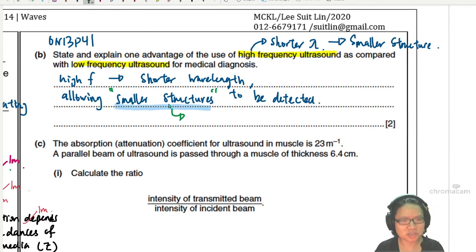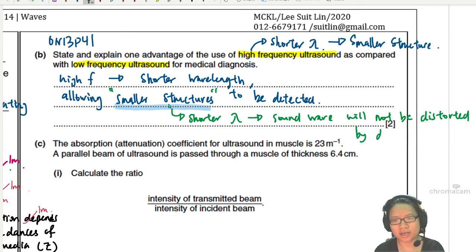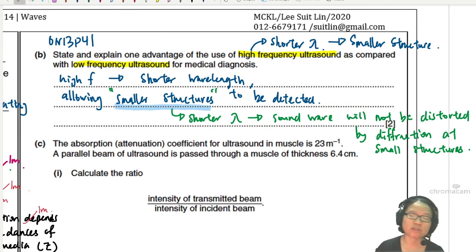So smaller structures here means shorter wavelength indicates that the sound wave will not be distorted by diffraction at small structures. That's the idea. High frequency, short wavelength, the sound wave will not be distorted by diffraction at small structures. And the very last thing that they like to ask you, I'm going to leave this calculation to you. You can do this. We have done the ratio many times already.